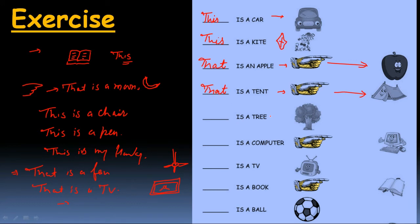एक tree है — नज़दीक है बिटा, ज़्यादा distance पर नहीं है — नज़दीक के लिए क्या use करेंगे? ज़ोर से बोलिए — 'This'। Yes! उसके बाद computer — हमारा दूर है — तो क्या use करेंगे बिटा? Far के लिए क्या use करेंगे? 'That is a computer'।